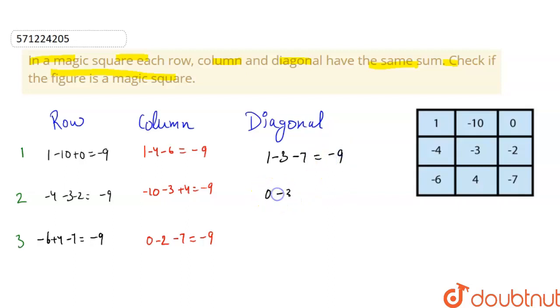And for diagonal 2, the sum is 0 minus 3 minus 6, which is also minus 9. Hence, we can see that the sum of all the rows, columns and diagonals is equal to minus 9. Hence, it is a magic square.